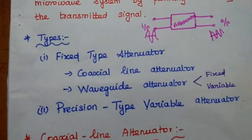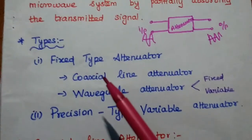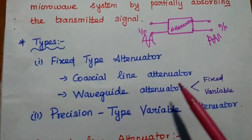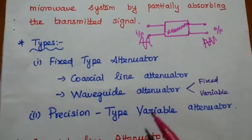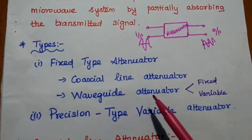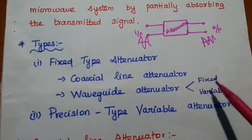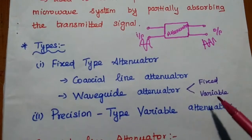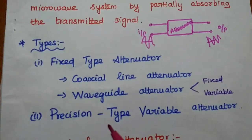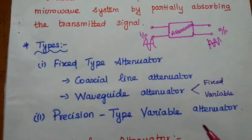One is fixed type, another one is variable type. In fixed type, examples are the coaxial line attenuator and the waveguide attenuator. The waveguide attenuator is again classified into fixed type as well as variable type. One major category of attenuator is the precision type variable attenuator.